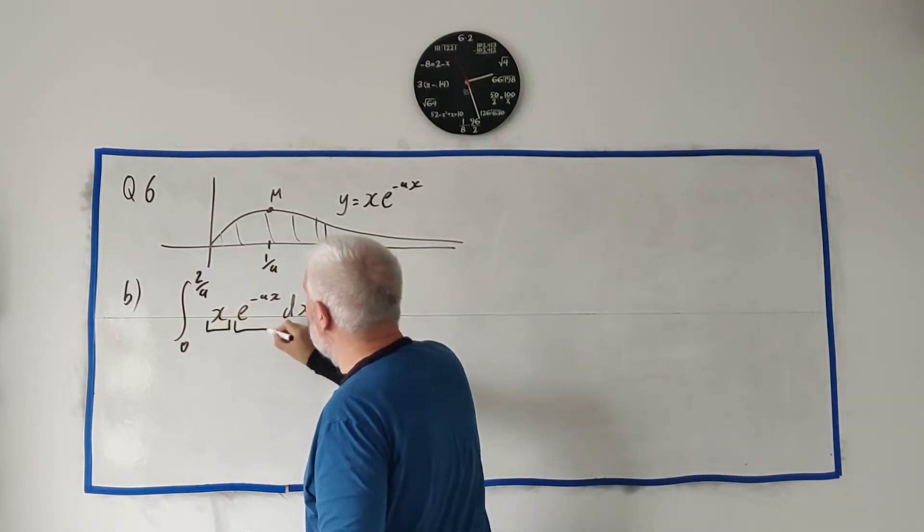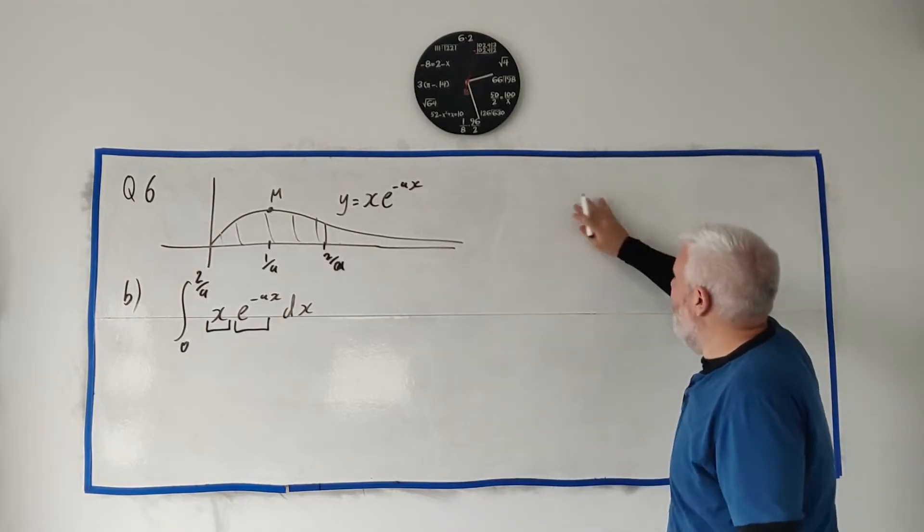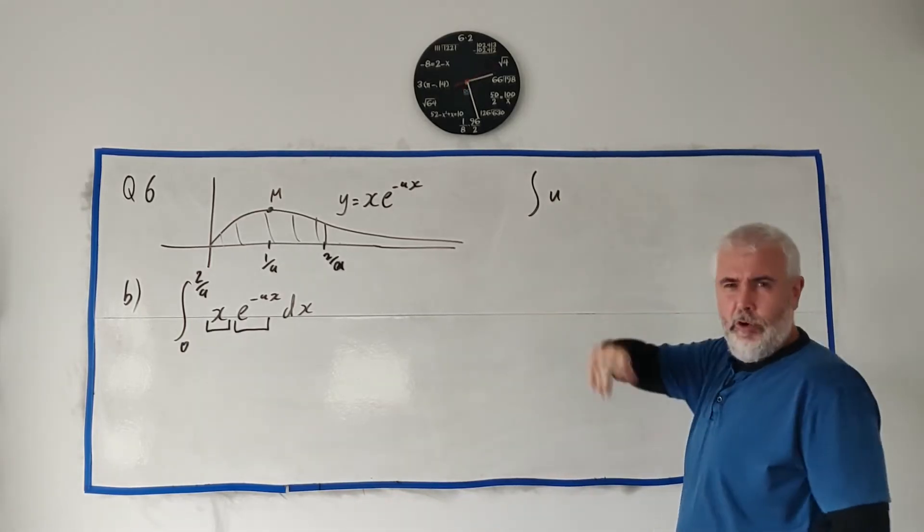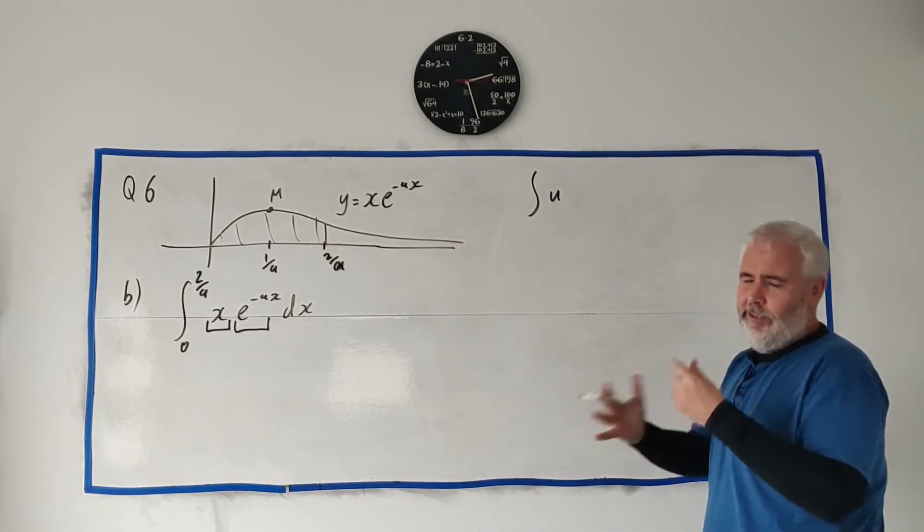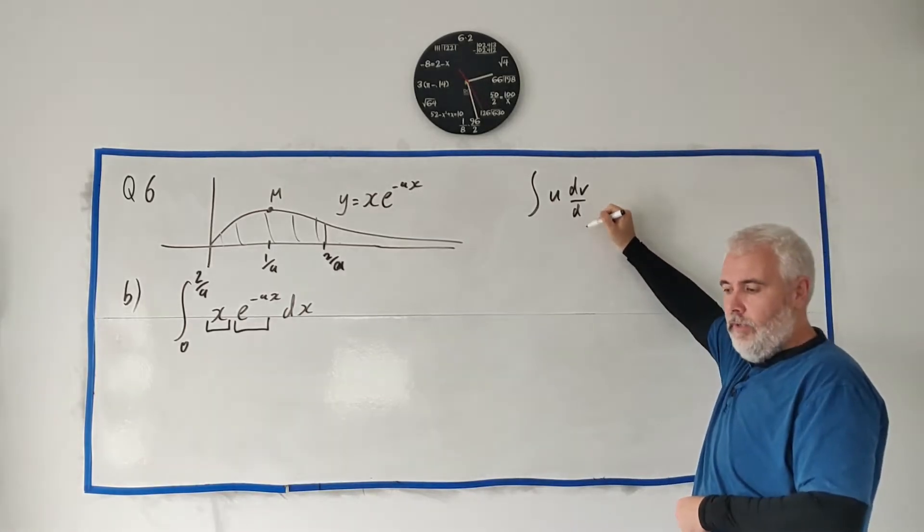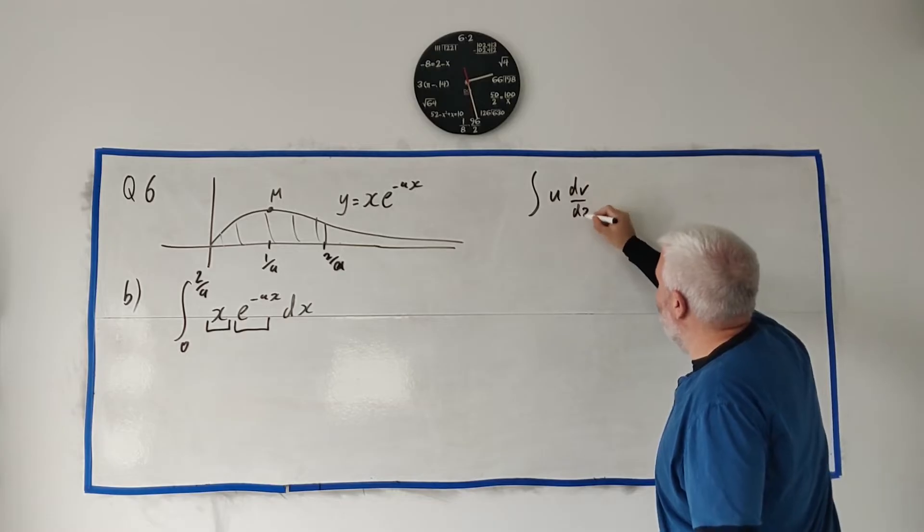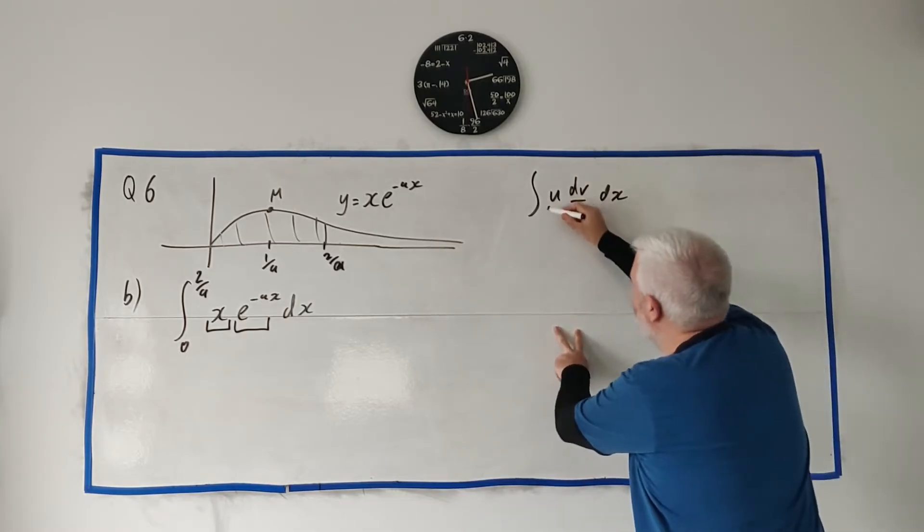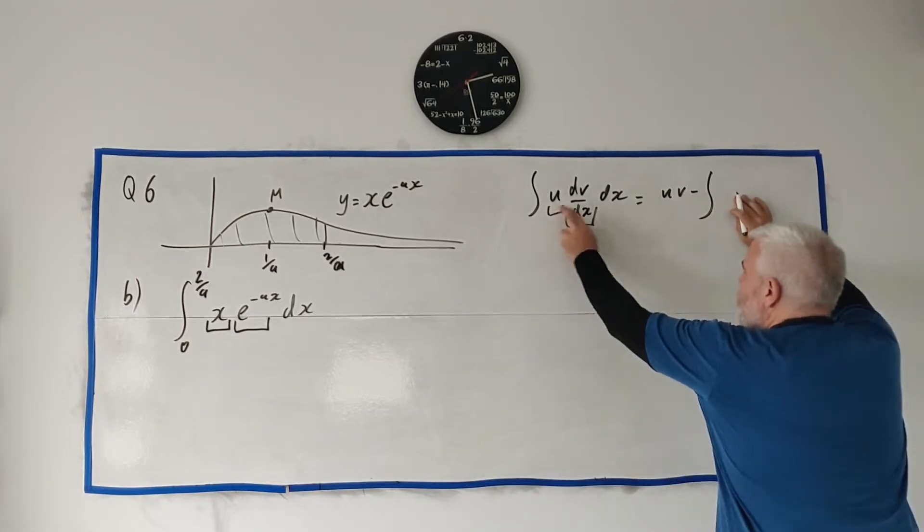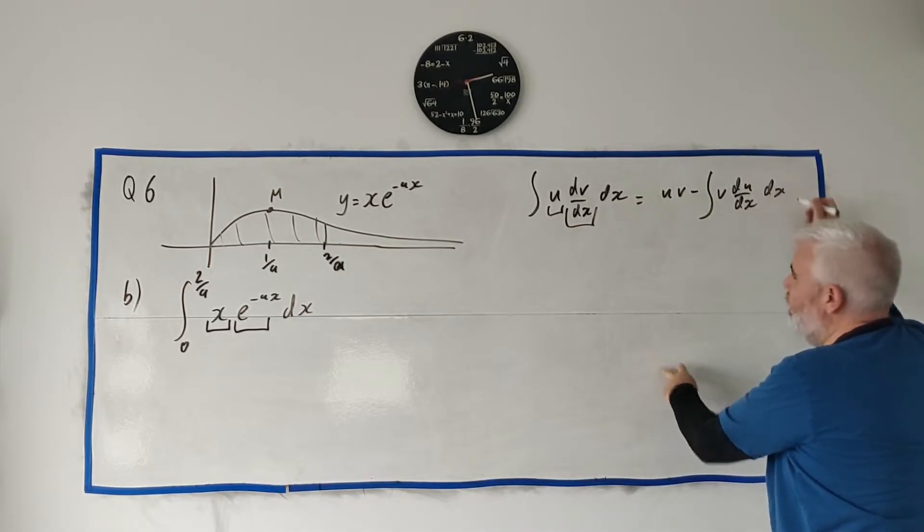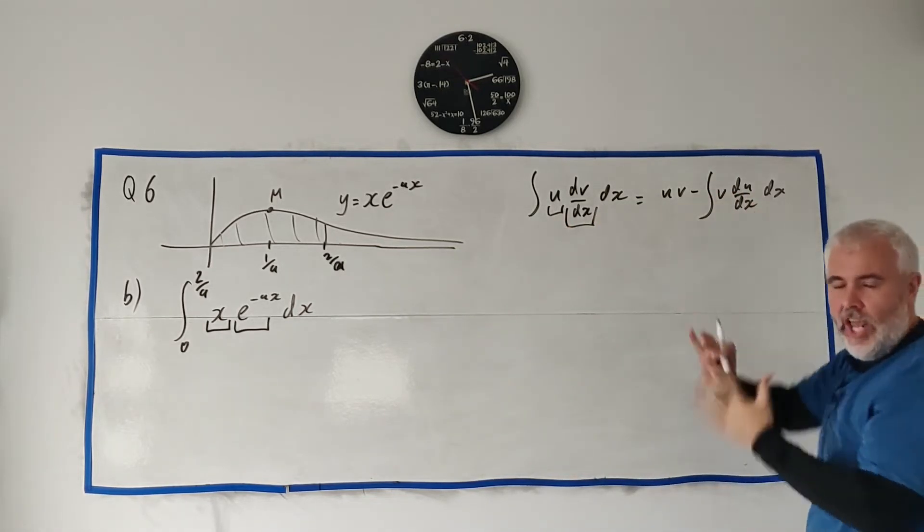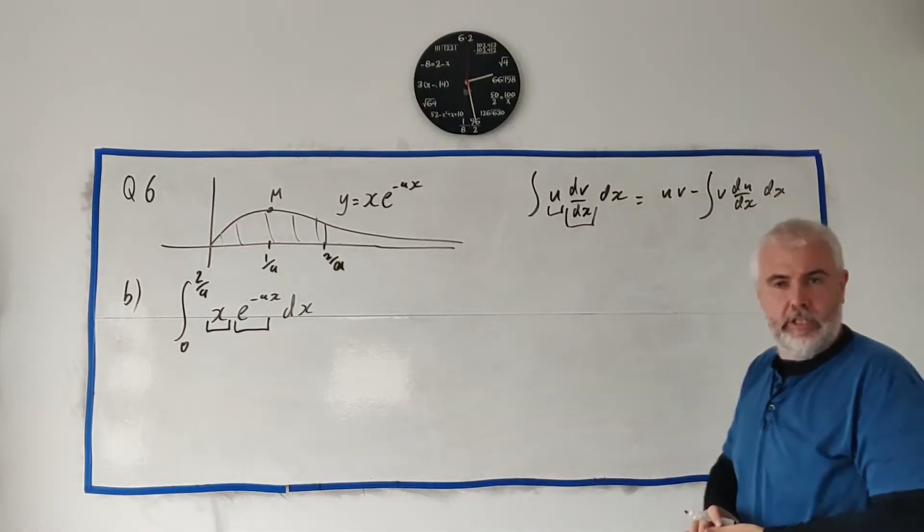What you're going to have to use is integration by parts. We use that when we have two things multiplying in integration and we can't find a nice substitution. You're given this formula: the integral of u(dv/dx)dx equals uv minus the integral of v(du/dx)dx. So integration by parts switches them around and changes them about, hoping it works out better. It's not guaranteed to work.